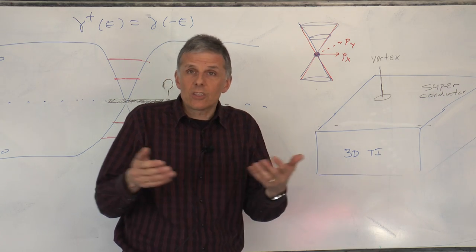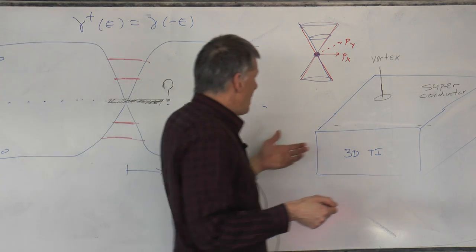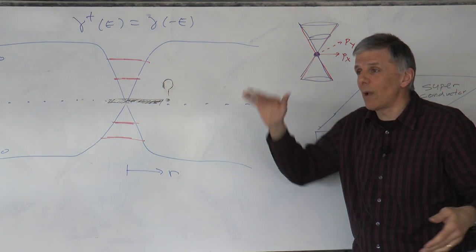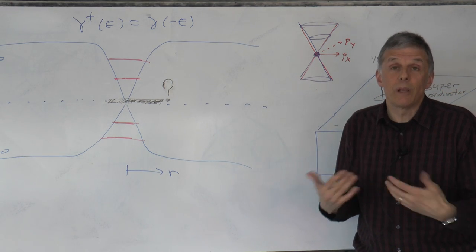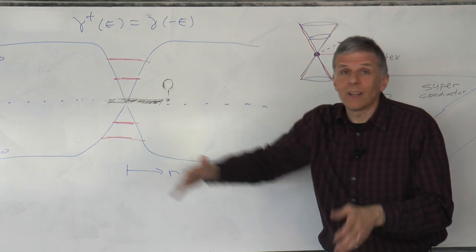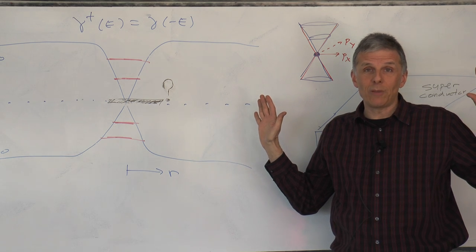You might think, let's just take graphene and a layer of graphene. Graphene is not superconducting by itself, but that's okay. We just put it on top of a superconductor. It will become superconducting by the proximity effect. Pierce a vortex through it, we'll have a level at zero, and we're done. We have Majorana fermions.